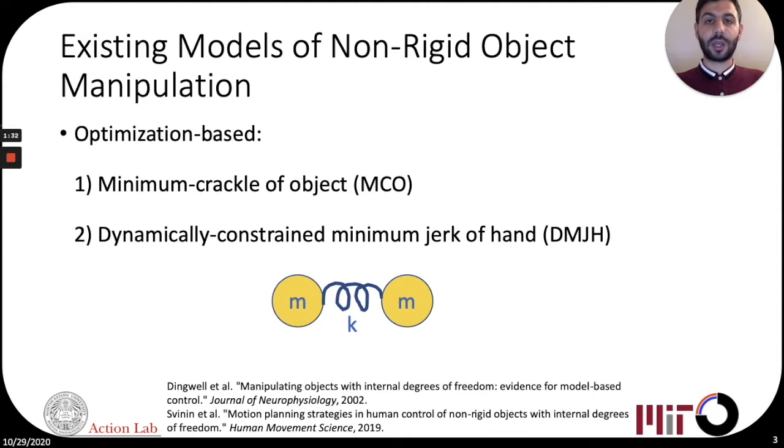That being said, there has been a limited number of studies that have investigated this problem, and those studies have mainly focused on developing descriptive models that identify that humans seek to optimize some smoothness criterion of the kinematics.